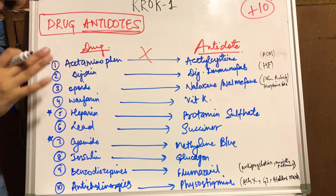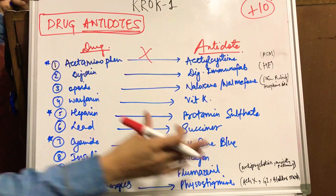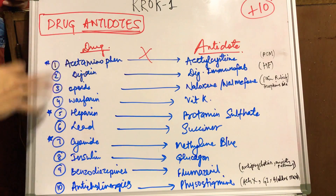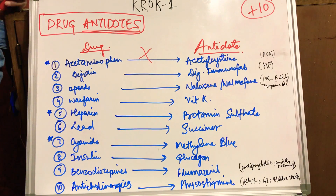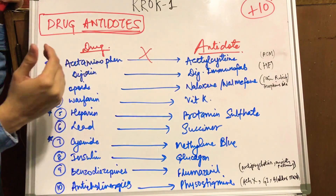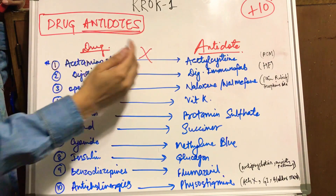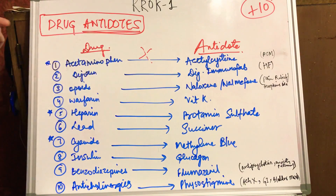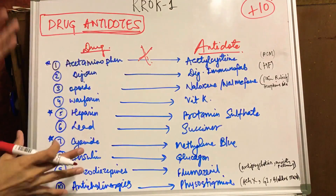Let's talk about drug antidotes. These are the names of the drugs and these are the names of the antidotes. What does an antidote mean? If we take any substance or any drug in an excessive amount — more than the normal dosage — we need something to counter and reverse the effect of that drug. The substance we take to counter the effect of a drug is called an antidote, and it has the opposite function of the drug.